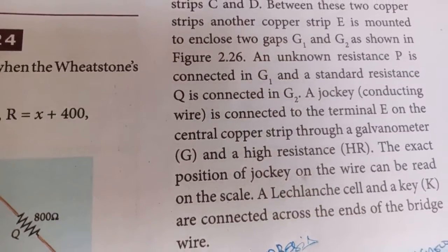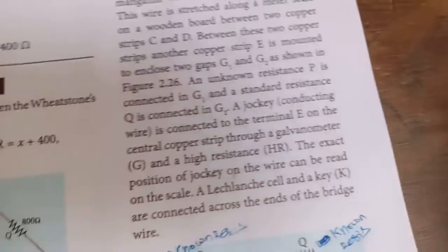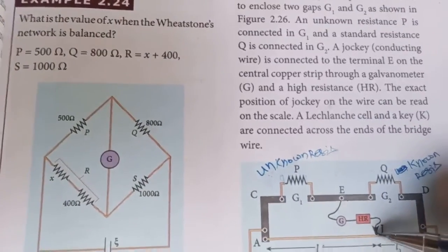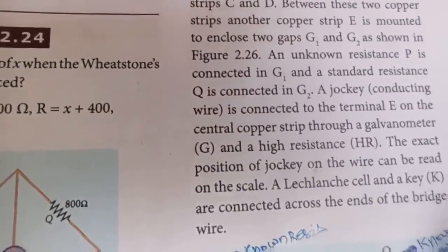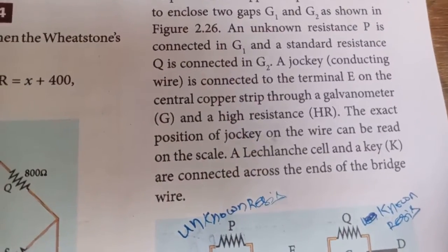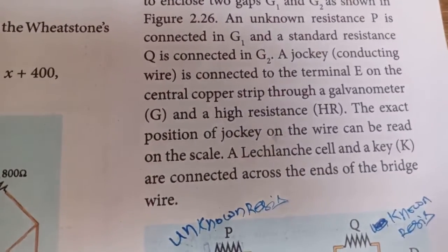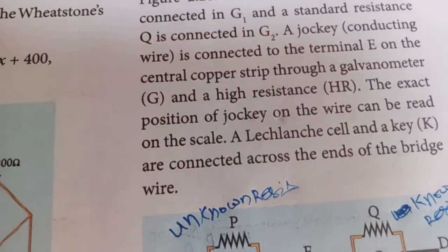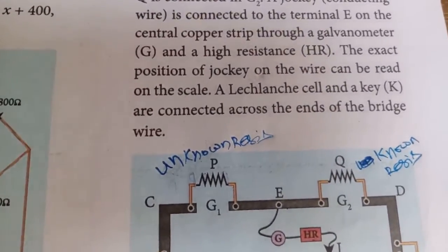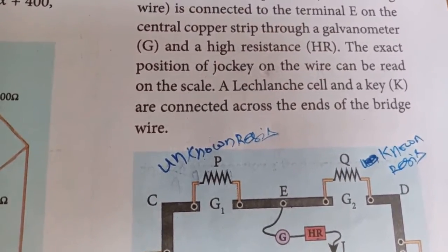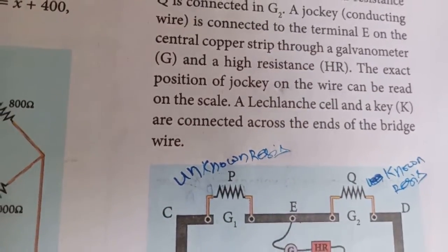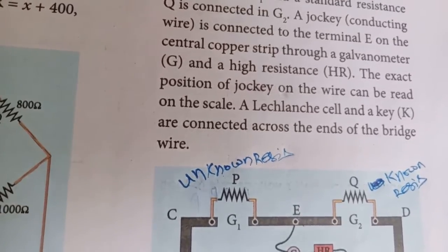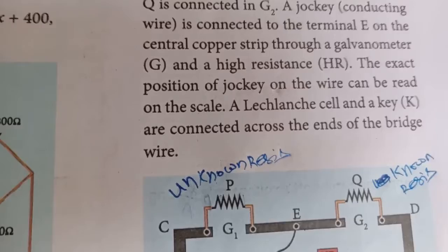Jockey J is connected to terminal E on the central copper strip through the galvanometer. The exact position of the jockey on the wire can be read on the scale, giving lengths L1 and L2.